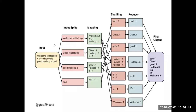Each mapper runs the map function, which identifies the word count in the given sub-file. The first sub-file is given to map one — it finds the count of each word: welcome one, crew one, hadoop one. The second sub-file is given to map two — it finds counts like class one, hadoop one. Each map function finds the word count in its assigned sub-file.